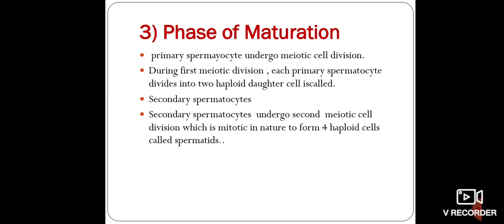In the first meiotic division, one primary spermatocyte gives rise to secondary spermatocytes. The secondary spermatocyte again undergoes meiotic cell division, which is the second meiotic cell division, mitotic in nature. As a result, four haploid cells are formed, which are called spermatids. By passing through all three phases — multiplication, growth, and maturation — four spermatids are formed. The spermatid is an immature sperm cell.